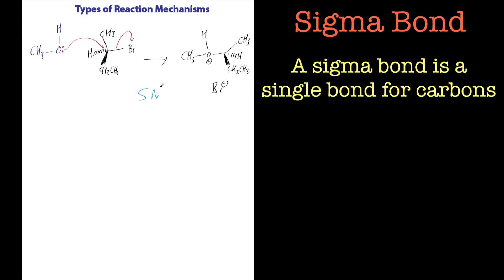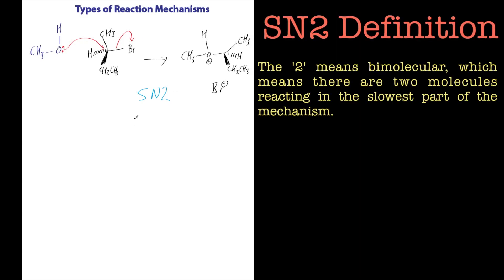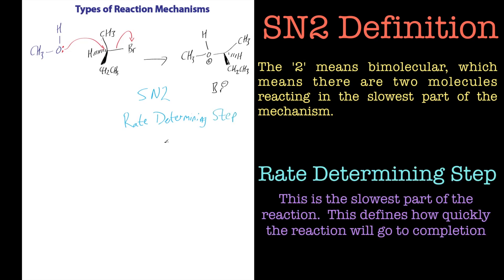And that's because it needs both species to be present in the slowest step, the rate determining step. The rate determining step, or RDS sometimes it's called. I'll call it RDS when I'm writing from now on. OK, so what does a rate determining step mean?